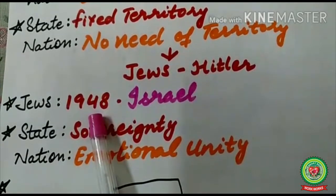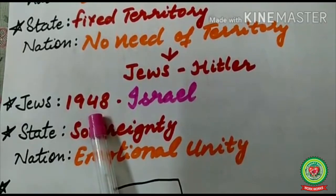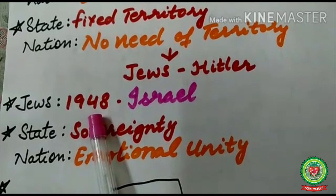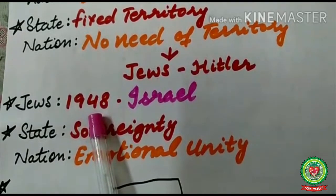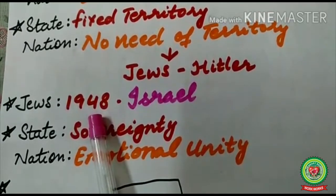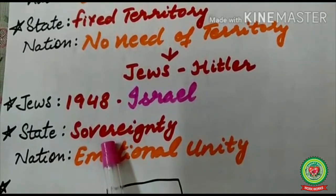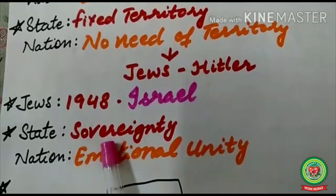Before 1948, the Jews had only a nation and not a state. In common usage, the terms 'state' and 'nation' are often used as synonyms, but in political science they are used differently. I hope you are clear about this with the example of the Jews. Now the next difference between nation and state is sovereignty — do you remember, sovereignty is one of the four elements of state.